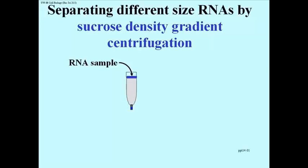We can separate different RNAs by differences in size, and this is done by sucrose density gradient centrifugation. Basically you have a tube, usually a plastic tube, in which you have set up a gradient of sucrose.